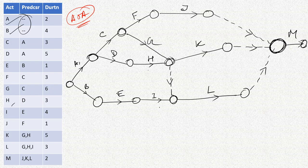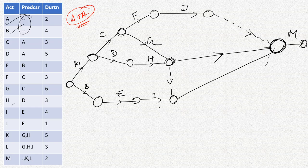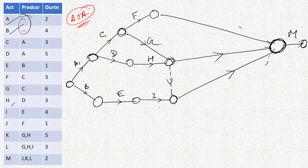Looking at the remaining parts of the diagram: the dummy activity and extra node on one part can be directly removed by joining nodes directly. Similarly other parts can be simplified. After joining J, K, and L directly, the activity diagram becomes much simpler.